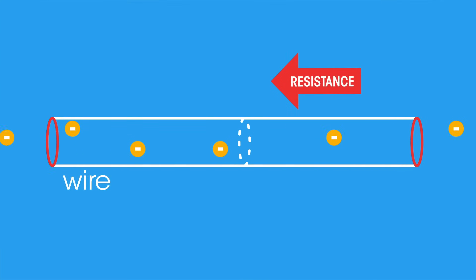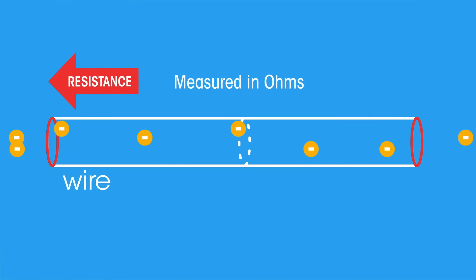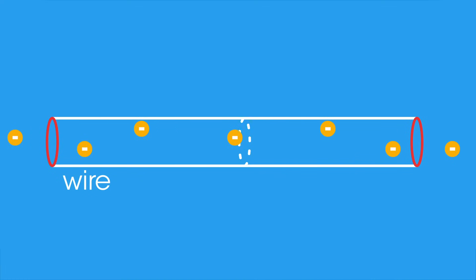Resistance is a measure of the opposition to current flow in an electrical circuit. Resistance is measured in ohms, symbolized by the Greek letter Omega. The higher the resistance, the more difficult it is for a current to flow. A good way to think about electricity is: voltage is the force pushing the current around, and resistance is as if the pipe carrying the current narrows.